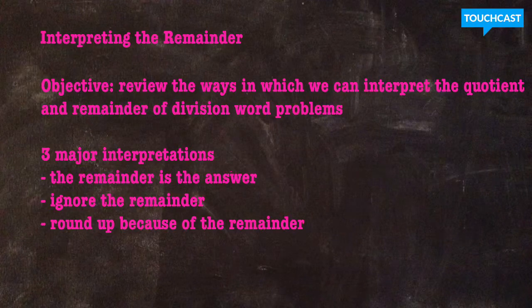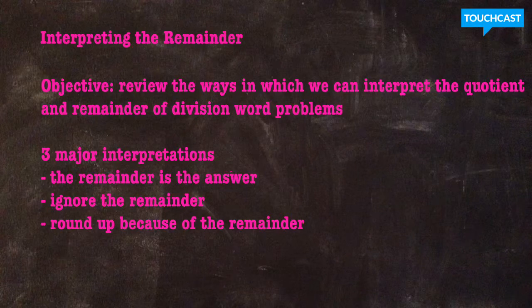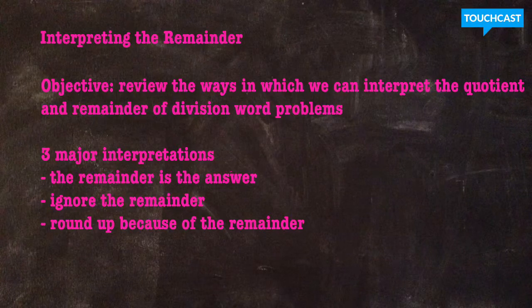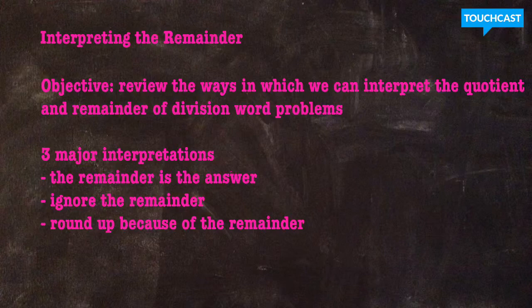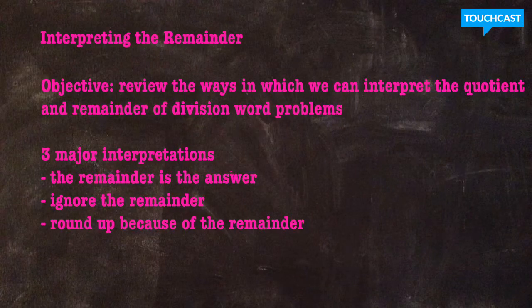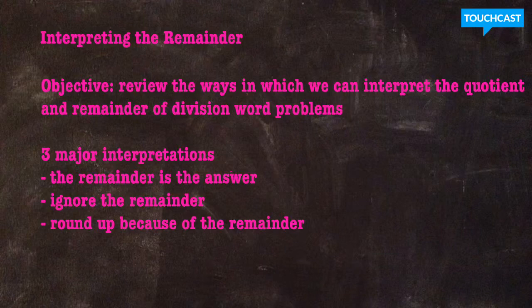Our three major interpretations that we're going to talk about is when the remainder of a word problem is actually the answer to the question being asked. Our second major interpretation is when we actually ignore the remainder, as in the remainder is not part of how we answer the question. And the third interpretation is when we round our final quotient or our final answer up to accommodate the remainder.